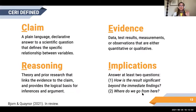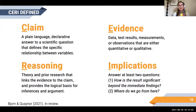So we have the four sections: Claim, Evidence, Reasoning, Implications. There's a fifth section we'll talk about briefly — Context. Context is all the background information that every piece of literature has.